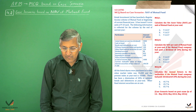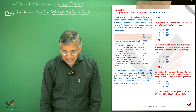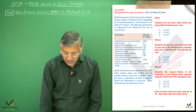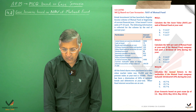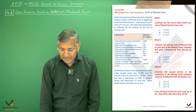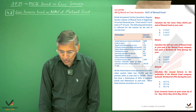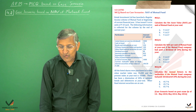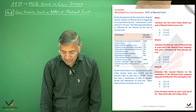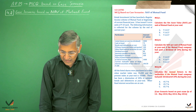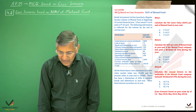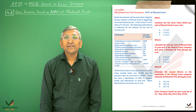We are given data for a corporate investment. It has launched a regular income scheme of mutual fund at the beginning of the current financial year, with the issue of 3 crore units of rupees 10 each. The following information is collected for the scheme by the end of the current year.